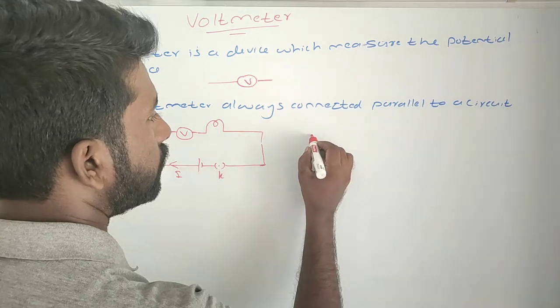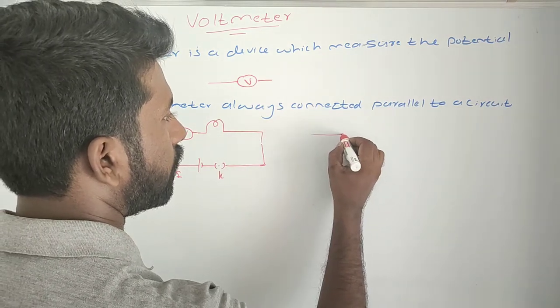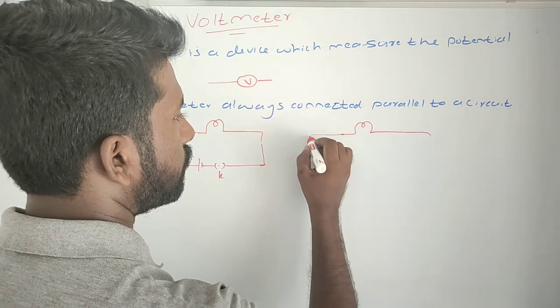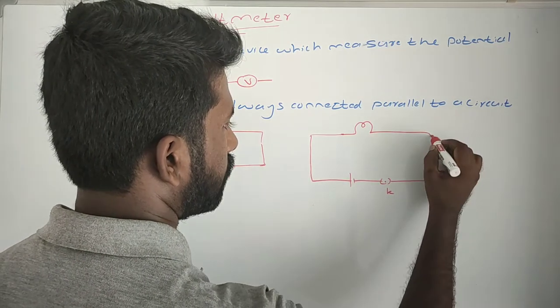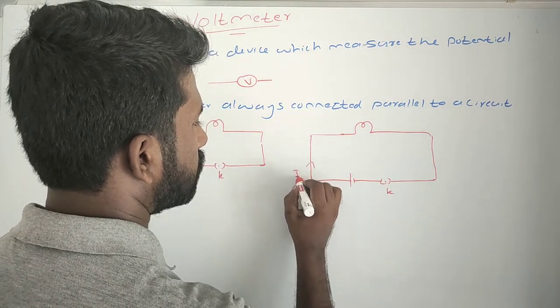So if it will be connected parallel, what will be happening? If I am going to connect this key, current will flow like this.